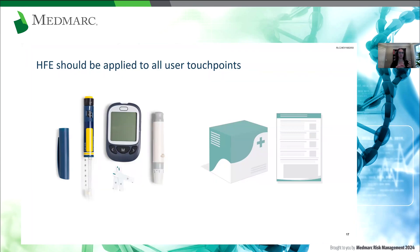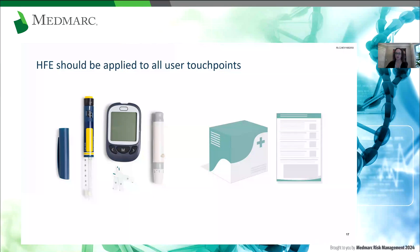On the user interface, you have a pen injector, a lancet used to get a drop of blood from your skin, and a blood glucose meter with test strips. You might think that's the product and that's what you're evaluating or designing to be safe and effective. But you also need to pay attention to things like the packaging, any labeling or instructions, and any training that your users might receive prior to using the product. When we talk about the product or the user interface, you really want to be thinking about each of these touchpoints.